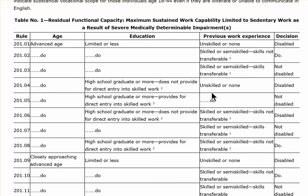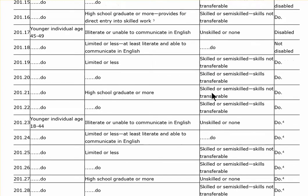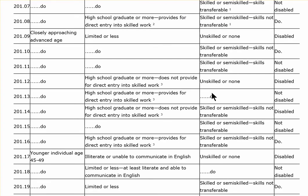The third column is for previous work experience. If you have unskilled or none — let's say you were a housewife for 35 years and now want to get disability based on the grid rules, not a physical disability — if you have no skilled employment history and just did domestic work your whole adult life, then you would be unskilled. And over here, the likelihood is they would rule that you are disabled.